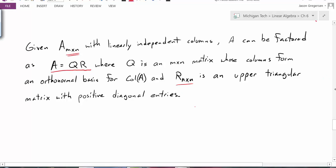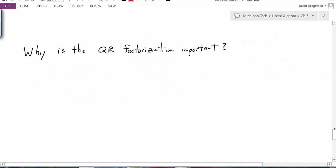So why would this be important? Why is the QR factorization important? Well, it's used for many different things, and we can use it for algorithms to solve equations, or to find eigenvalues and eigenvectors.